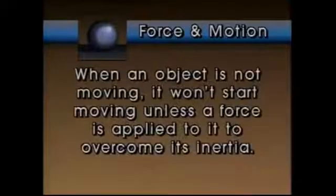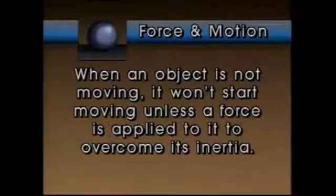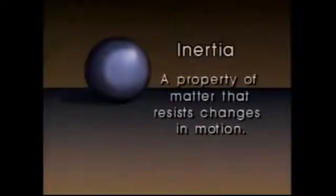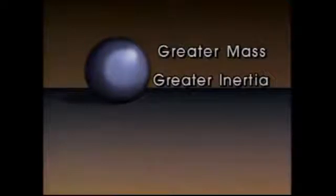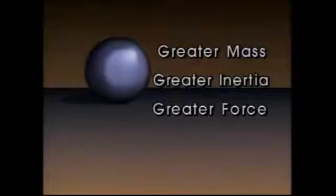Let's take a look at three basic laws of force and motion. The first law states that when an object is not moving, it won't start moving unless a force is applied to it to overcome its inertia. Inertia is a property of matter that resists changes in motion. An object that's not moving remains at rest because of its inertia. And when an object is moving, its inertia causes it to continue moving in a straight line unless a force is applied to it. Inertia relates directly to the mass of an object — so the greater the mass, the greater the inertia, and the greater the force required to start, stop, or change the direction of a moving object.